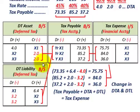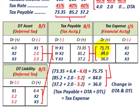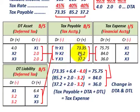Tax expense is the plug between tax payable and the deferred account changes. For year X1: credit tax payable $73,350, plus credit to deferred tax liability $6,400, minus debit to deferred tax asset $4,000. Netting these out requires a debit to tax expense of $75,750. The deferred tax asset reduces tax expense while the deferred tax liability increases it.